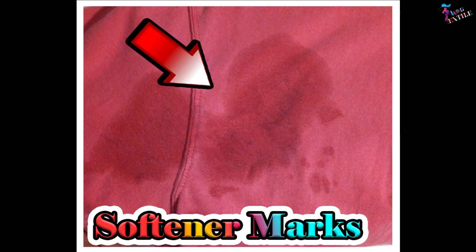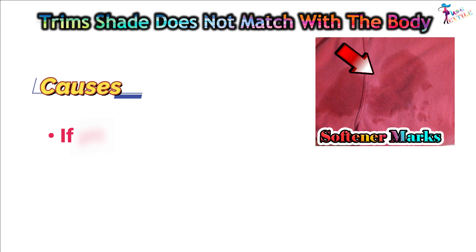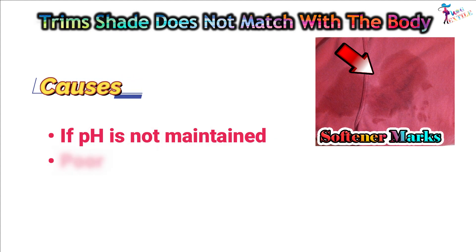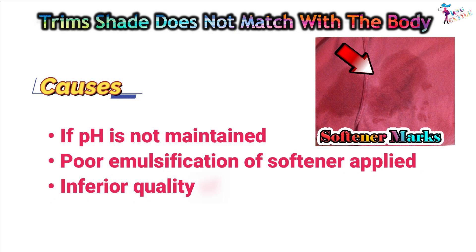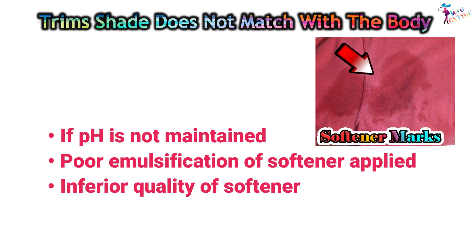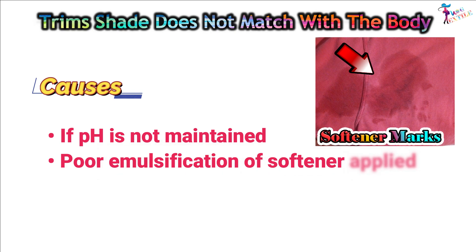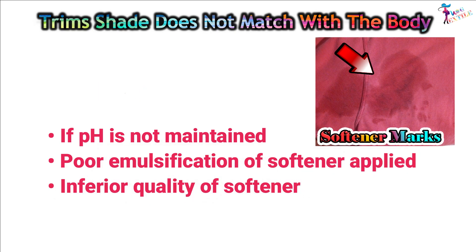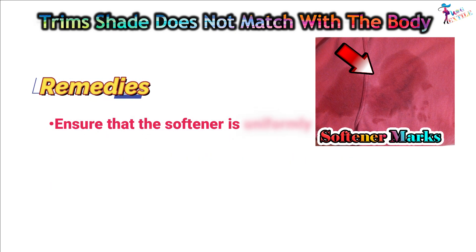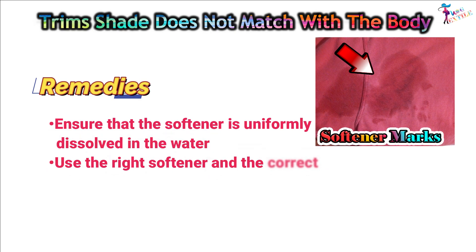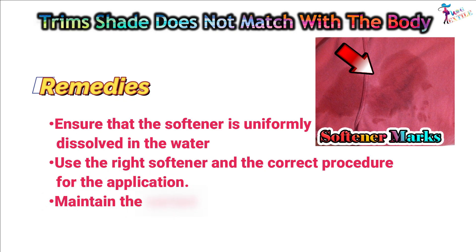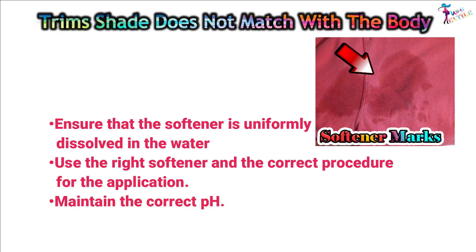Softener Marks. Causes: If pH is not maintained, poor emulsification of softener applied, and inferior quality of softener. Remedies: Ensure that the softener is uniformly dissolved in the water, use the right softener and the correct procedure for the application, and maintain the correct pH.